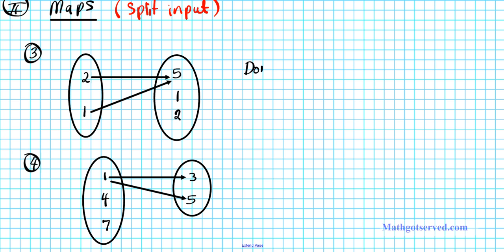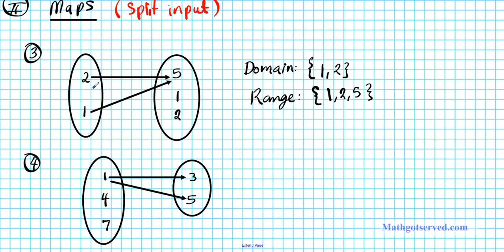Let's apply that strategy to examples three and four. For number three, the domain is {1, 2} and the range is {1, 2, 5}. Is this a function? Look at the inputs: two has exactly one arrow going out to five, and one has exactly one arrow going out to five. The inputs are paired with exactly one output each. Even though this output has two inputs, that doesn't matter — since both inputs have exactly one output, this is a function.